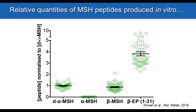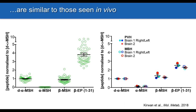To confirm this wasn't an artifact of our culture system, we took advantage of a local brain bank to obtain fresh samples of primary human brain tissue. When we performed the same quantitative mass spectrometry, we found essentially exactly the same result: desacetyl alpha-MSH and beta-MSH were produced at very similar quantities and at much higher quantities than mature alpha-MSH. This suggests that beta-MSH likely plays a prominent role in human energy homeostasis, and that we need to rethink the central role ascribed to alpha-MSH.